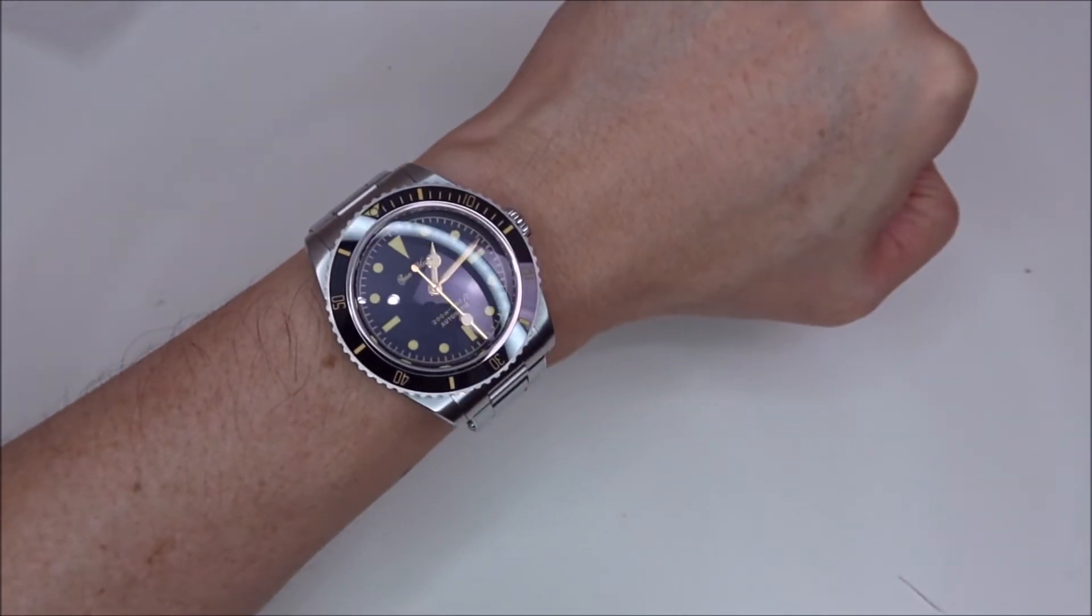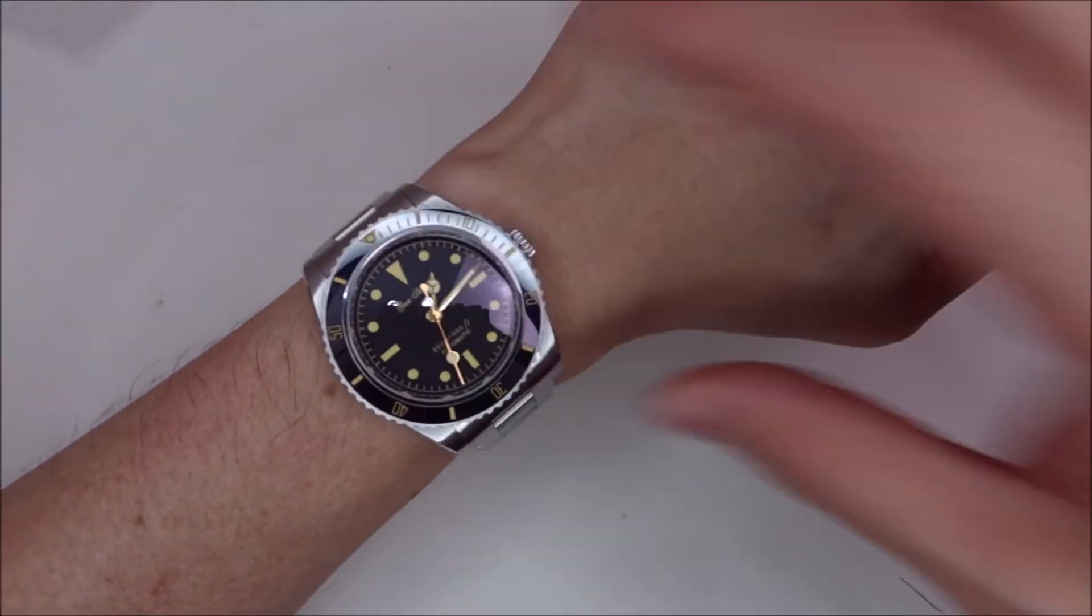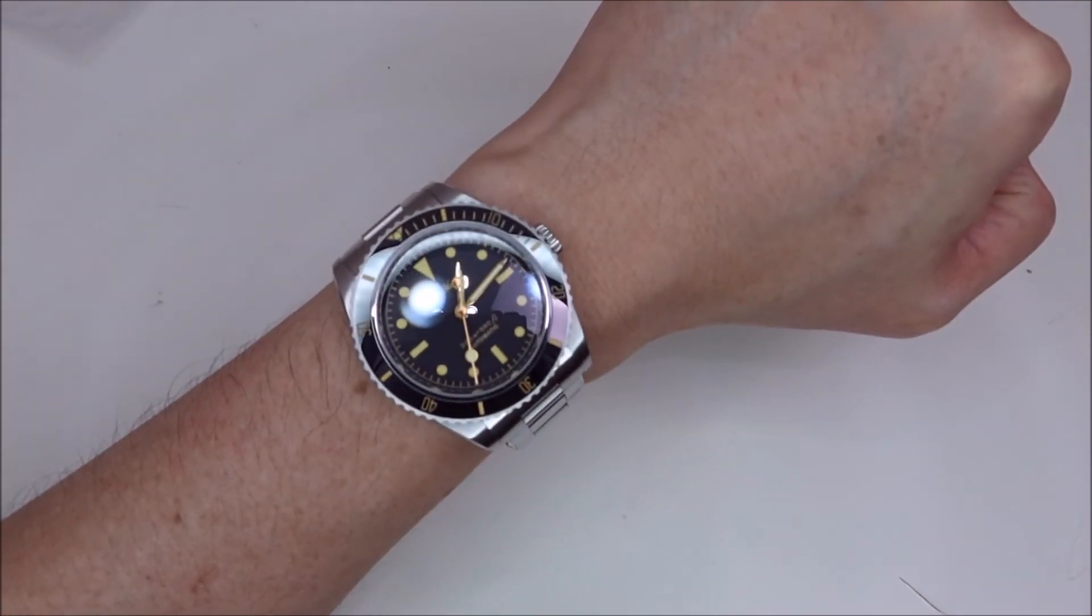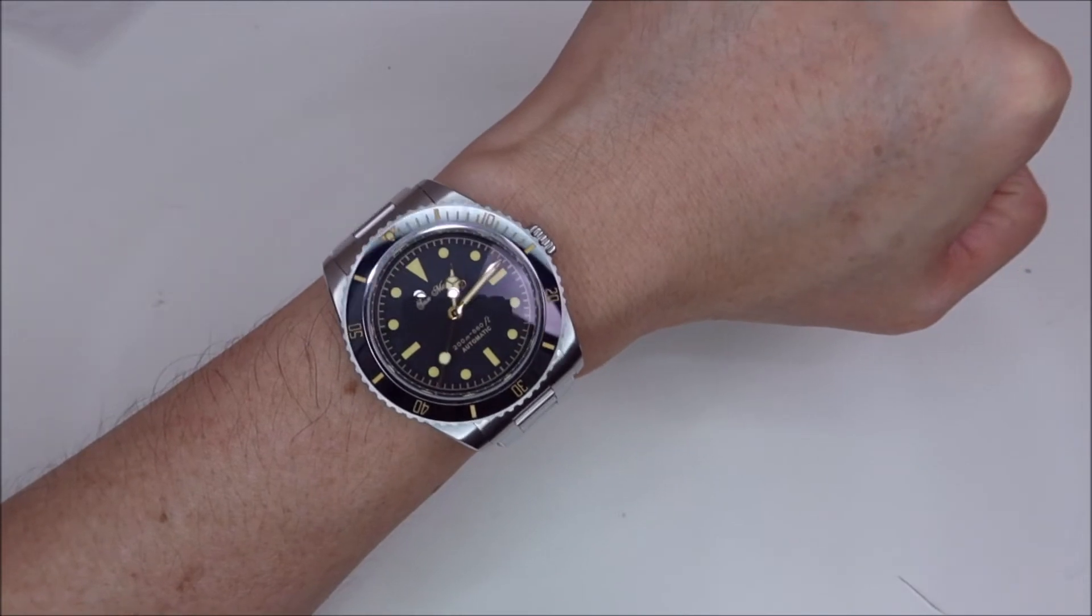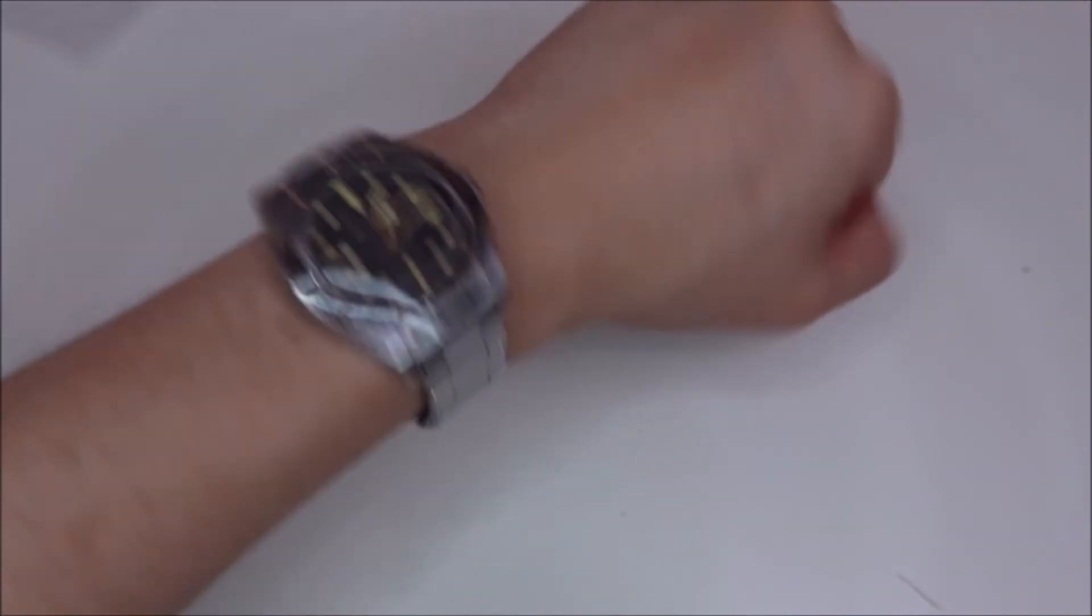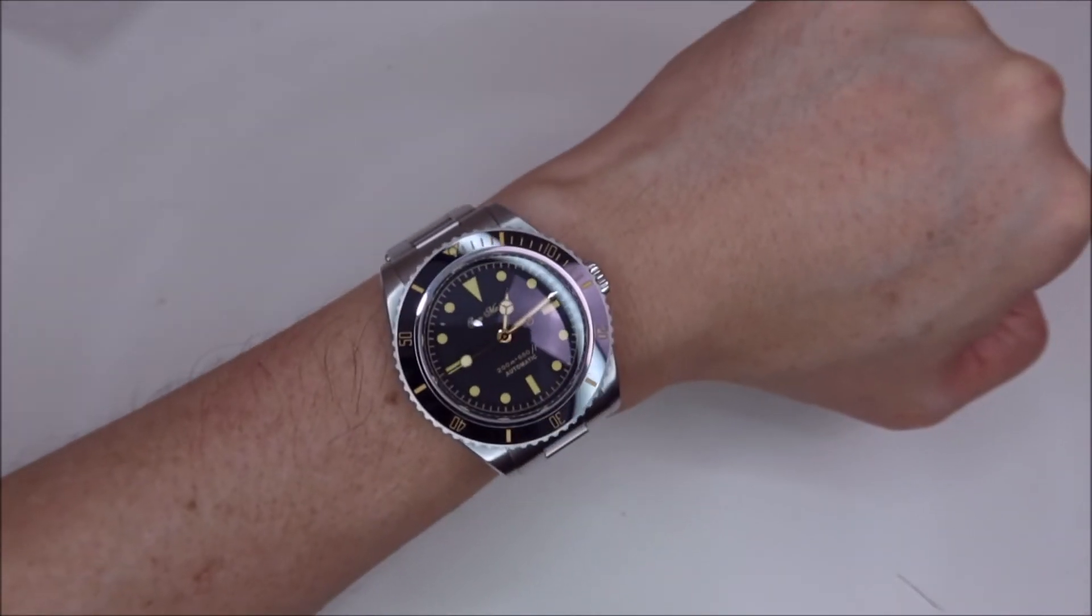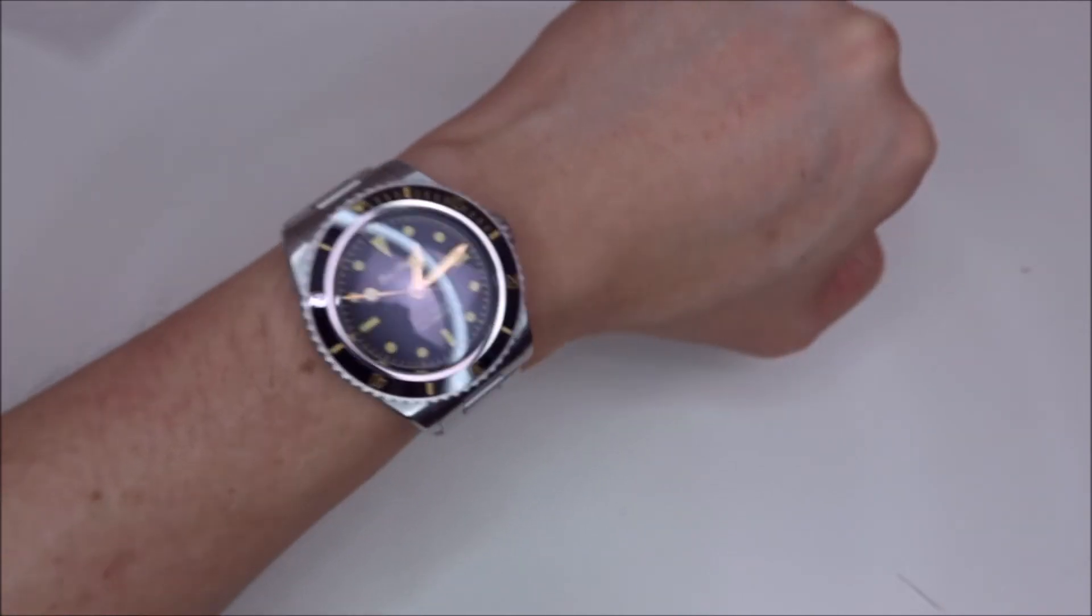Oh, on the wrist, I think it feels a lot better because I don't have that, you know, center end links coming out. So yeah, I think it's much better now compared to previously. So yeah, this is how the watch sits on my small six inch or 15.2 centimeters wrist. So what do you think? I think it looks okay.